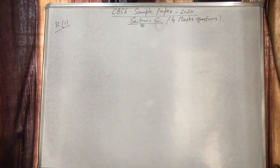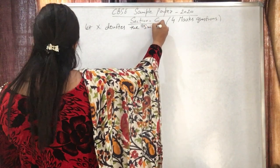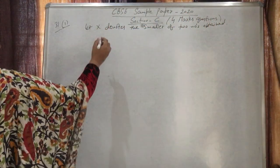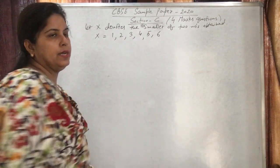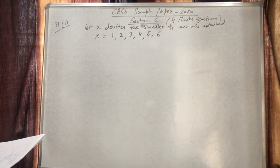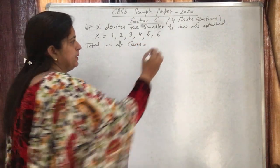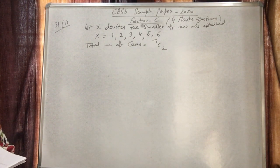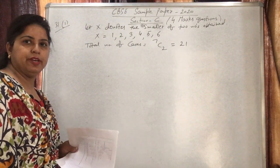Total number of ways to select 2 numbers from 7 is ⁷C₂ = 21. For X=1: there are 6 pairs where 1 is the smaller (1,2), (1,3), ..., (1,7), so P(X=1) = 6/21. For X=2: 5 pairs, P(X=2) = 5/21. For X=3: 4/21. For X=4: 3/21. For X=5: 2/21. For X=6: 1/21.